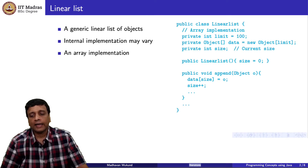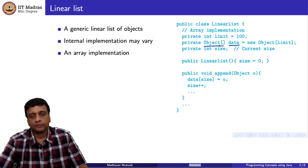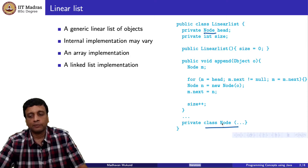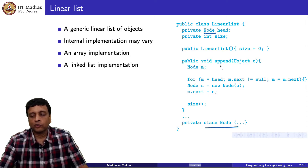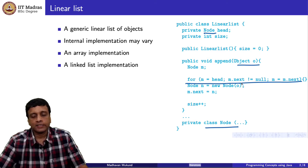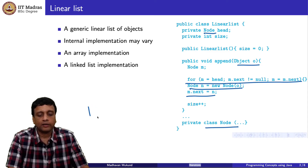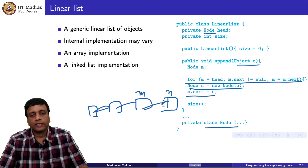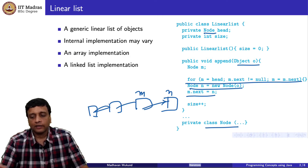For instance, we could have an array implementation where we have an array called data which is an array of object. We could also have a linked list implementation where we have a node, and this private class node will have two parts: a data part of type object and a next of type node. If I want to append to such a thing, I iterate through the linked list starting from the head, going through next until I reach the last node where m.next is null, then create a new node and stick it at the end. So I now have two different implementations: an array implementation and a linked list implementation.